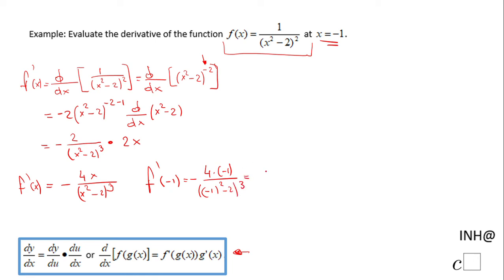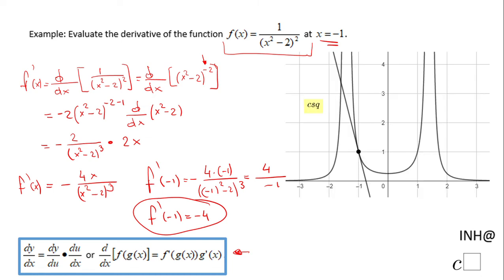That will be positive 4 — simplifying the double negatives — and the denominator is 1 minus 2, which is negative 1 to the third power, giving negative 1. So the simplified form is negative 4. That is the value of the derivative of f(x) at x = -1. If you remember, this means the slope of the tangent line at x = -1, and you can see right here the slope of this line is negative 4.